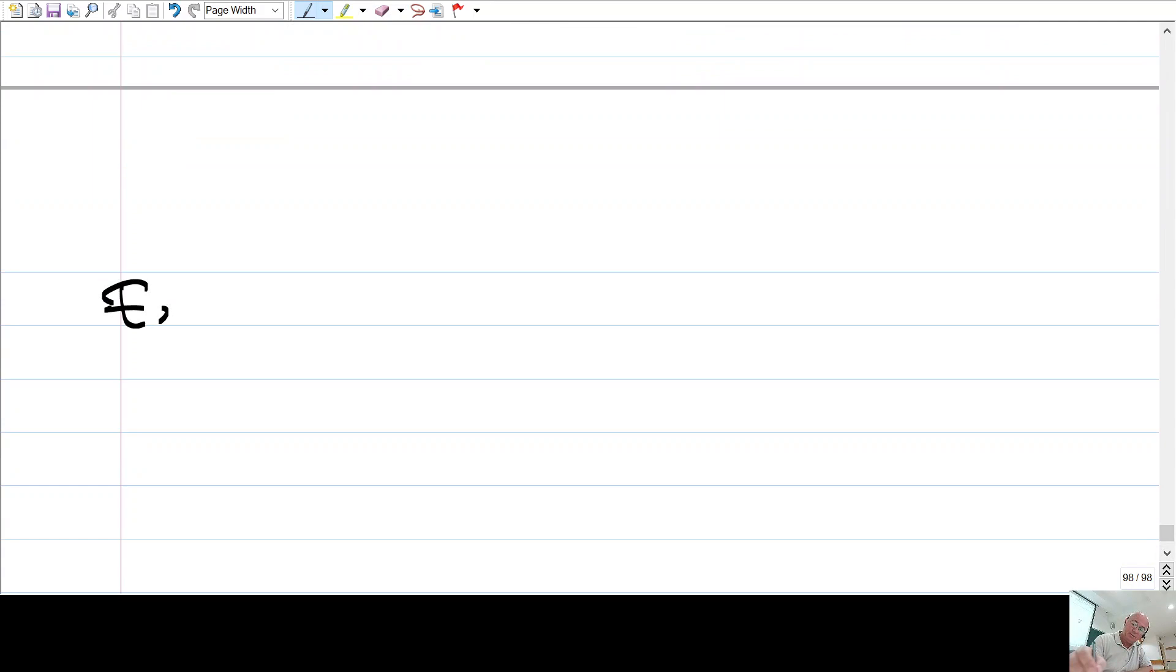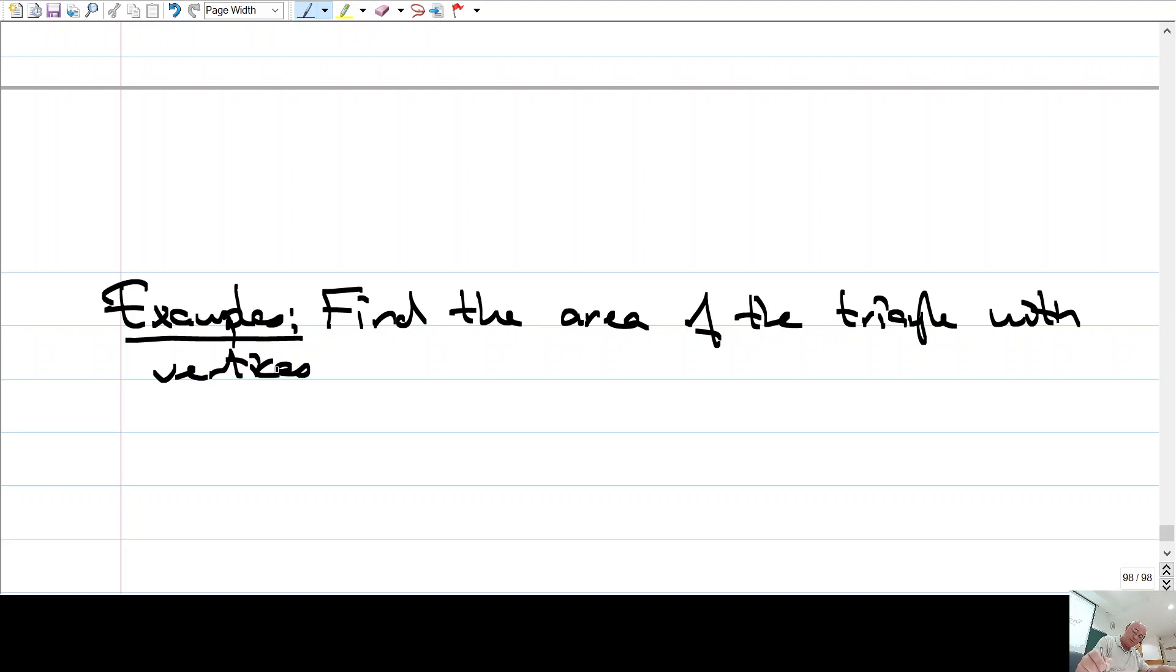So here's some examples. Okay. Find the area of the triangle with vertices A, which is 1, 1, 0, B, 3, 0, 2, and C is 0, minus 1, 1.